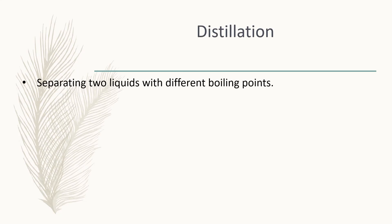The next method we will look at is distillation. Distillation is used to separate two liquids with different boiling points. There are two processes that are part of the distillation process, namely boiling and condensation. Distillation differs from evaporation in that the evaporated liquid is collected. Every liquid has its own unique melting and boiling points, and we can use the different boiling points to separate a mixture of liquids. The substance with the lowest boiling point, or with the weakest forces between particles, will evaporate first and can therefore be separated from the mixture first. This process is called fractional distillation.